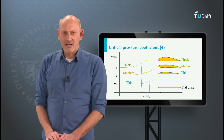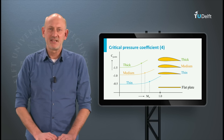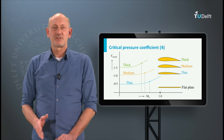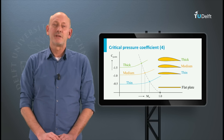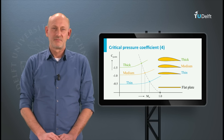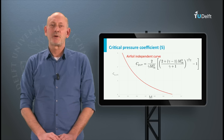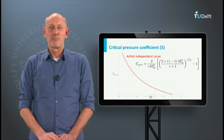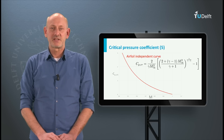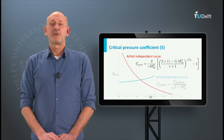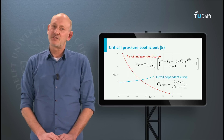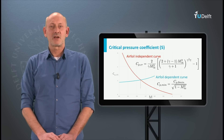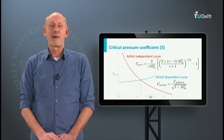If we now go back to the graph, we see that the points on the Cp lines are connected by this new relation. We have found a general expression for the critical Mach number and the critical Cp, and we have an airfoil-dependent relation for Cp. The intersection of these two curves gives us the critical Mach number for our airfoil.